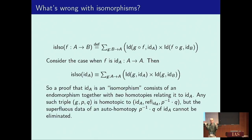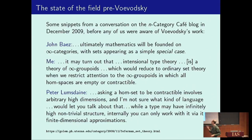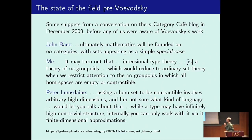Together those form a loop, so there's some non-trivial homotopy going on in this structure, and that's not really what we want. We want something to just be an isomorphism or an equivalence. This is a snippet from a conversation on the n-Category Café blog in December 2009. I certainly was not aware of Voevodsky's work at this time, and I don't think either of the others were either.